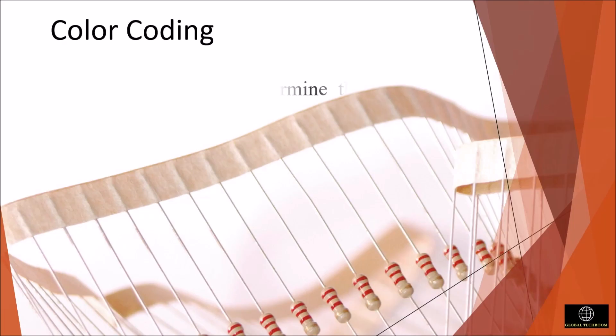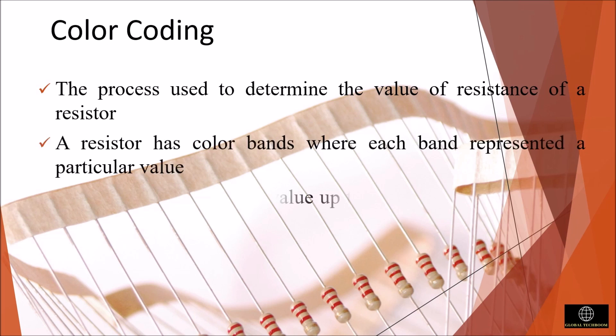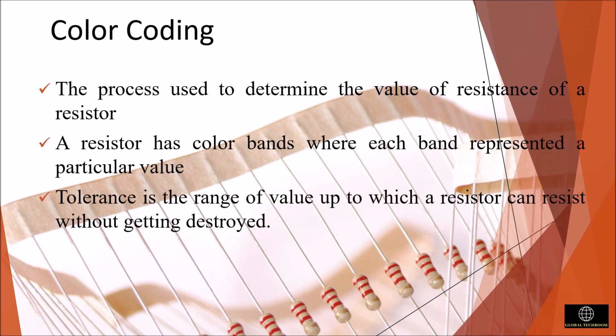Resistors are color coded with markings that allow us to quickly identify the resistance value and tolerance. The process used to determine the value of resistance of a resistor is called as color coding. A resistor has color bands where each band represents a particular value. Tolerance is the range of value up to which a resistor can resist without getting destroyed.